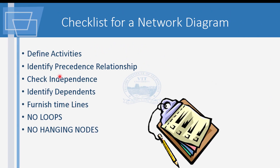In CPM and PERT, the network diagram is fundamental. When you join an organization, you need to know the activities associated with the work. This evolves through common sense and experience gained in the company. Remember: there should be no loops and no hanging nodes in your network diagram — these are key constraints to ensure when preparing it.